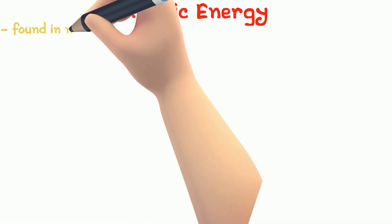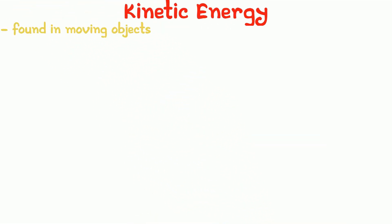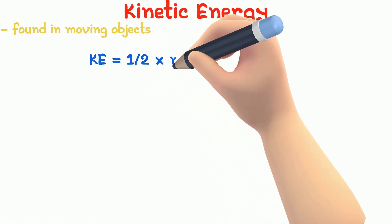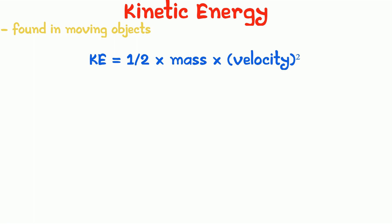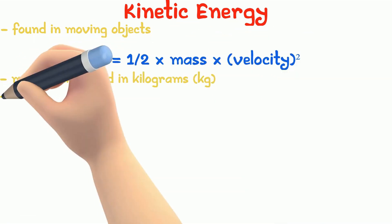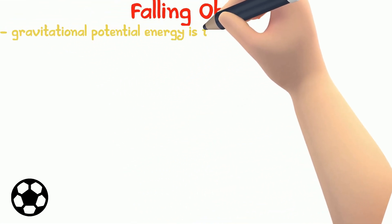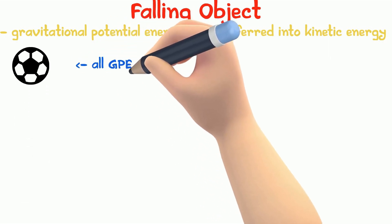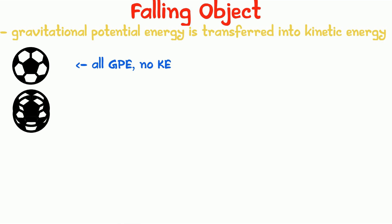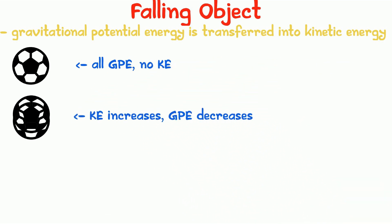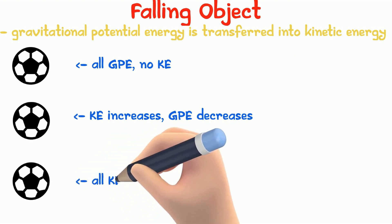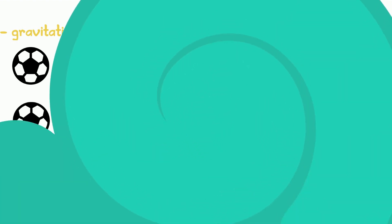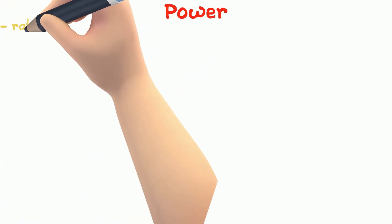Kinetic energy is found in moving objects. You can calculate the kinetic energy using the equation KE equals half mv squared, half into mass into velocity squared. Mass is measured in kilograms and velocity in meters per second squared. When an object falls from height, its gravitational potential energy is transferred into kinetic energy. When the object is held at a high place, it is all GPE and no kinetic energy. But when it is dropped, the kinetic energy increases as the gravitational potential energy decreases. And right before the object hits the ground, all GPE has been transferred into kinetic energy.